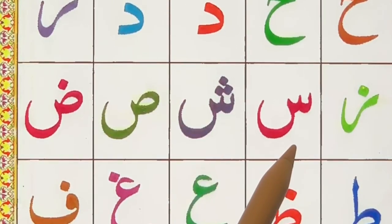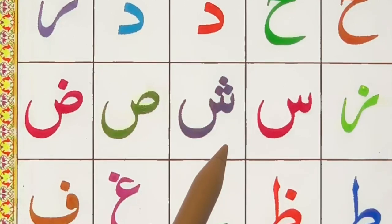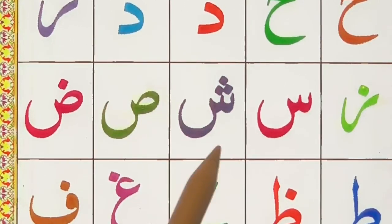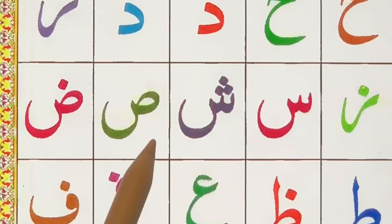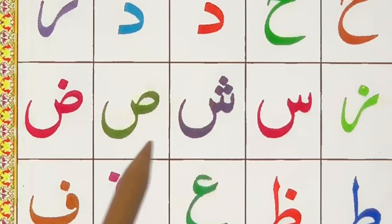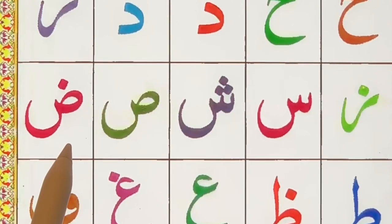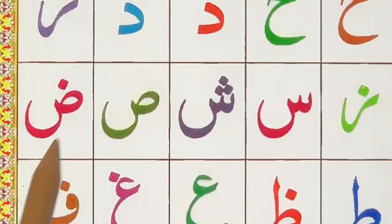Zay. Seen, seen, seen. Sheen, sheen. Saad, saad. Dad, dad.